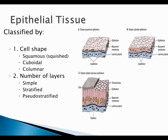Epithelial tissues are defined by either shape or number of layers. The shapes can be squamous (squished down), cuboidal (cube-like), or columnar (column-like). The number of layers are either simple (one layer), stratified (more than one layer), or pseudostratified — which looks like multiple layers, but all cells are actually touching the basement membrane, making it simple. If all the cells are touching the basement membrane, that's only one layer regardless of appearance.